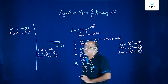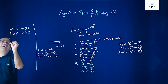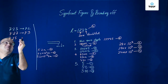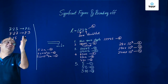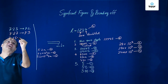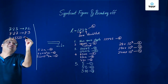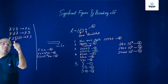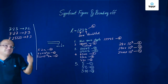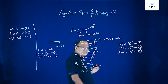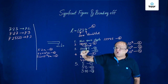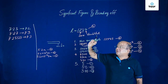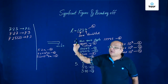Third rule: if the digit to be dropped is 5 followed by digits other than zeros — for example, 5 is there and then there are digits like 1, 2, 3 — then the preceding digit is increased by 1. So this is effectively more than 5. If the digit to be dropped is 5 followed by digits other than zeros, then the preceding digit is always increased by 1.